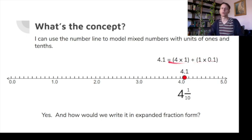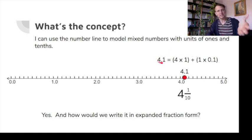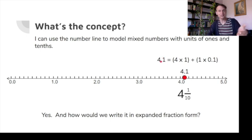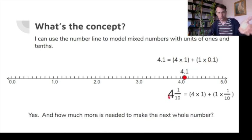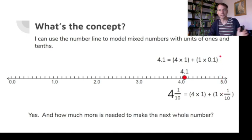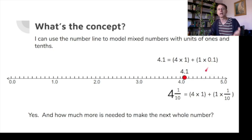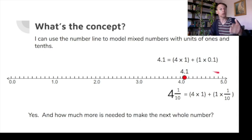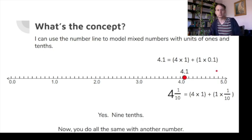In fraction expanded form it's the same, except the one-tenth decimal is written as one-tenth fraction: four and one-tenth equals four times one plus one times one-tenth. How many more tenths to get to the next whole number, five? We need nine-tenths more to go from four and one-tenth to four and ten-tenths, which is five.